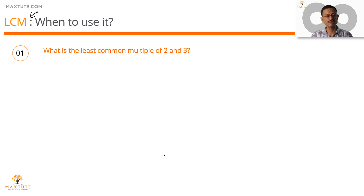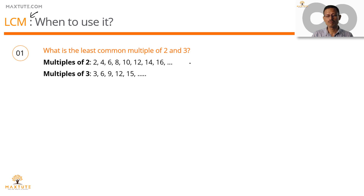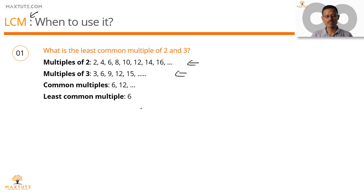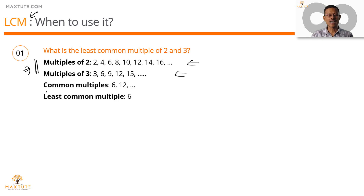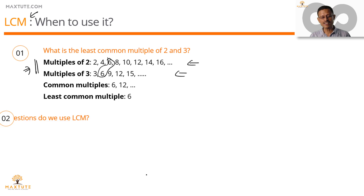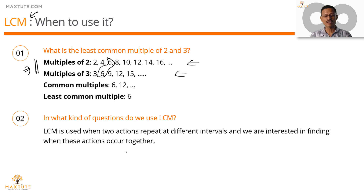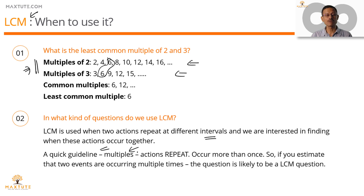Let's say we want to find the LCM of 2 and 3. We list down multiples of 2 and multiples of 3, pick out the multiples common to both, and find the smallest such multiple — that's the LCM. The clue comes from this: something occurs and repeats in intervals of 2; another event occurs in intervals of 3. We're trying to find out when these two events occur together. That is when we'll use LCM — when two actions repeat at different intervals and we want to find their common meeting point.